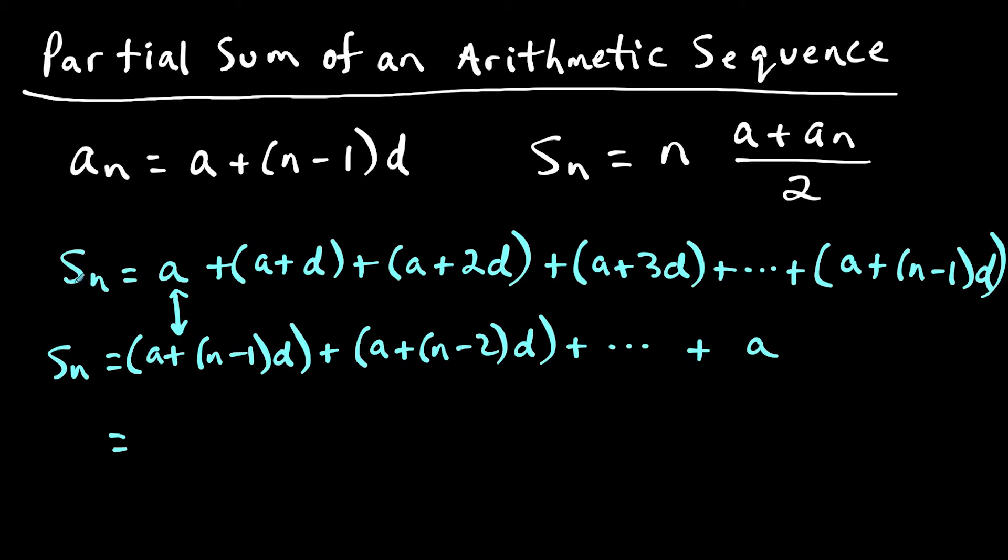So first, what we could do is add the left side. S sub n plus S sub n is equal to 2 times S sub n. And then here, when I do a plus a plus n minus 1 times d, that's just going to give us 2 times a plus n minus 1 times d. So these are the like terms that I could combine here.